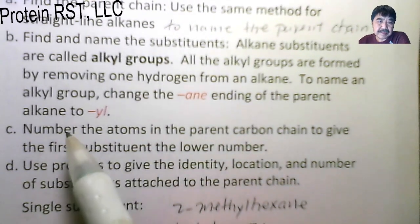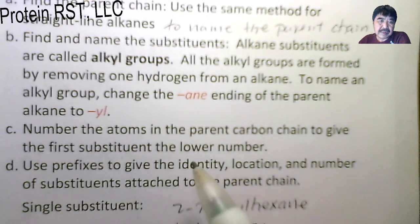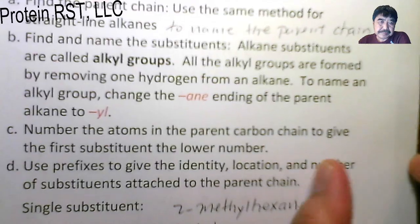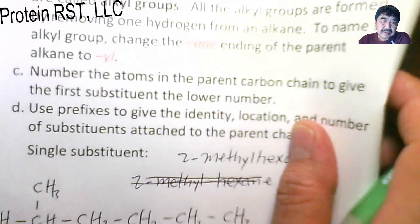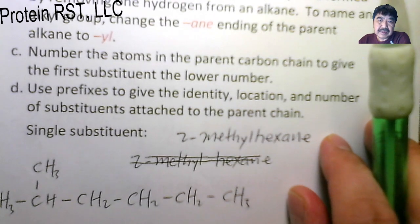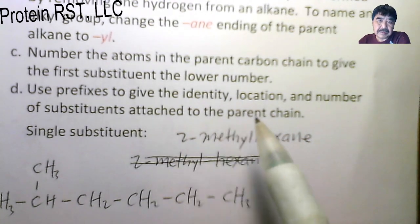Then number the atoms in the parent carbon chain to give the first substituent the lower number. Use the prefixes to give the identity, location, and the number of substituents attached to the parent chain.